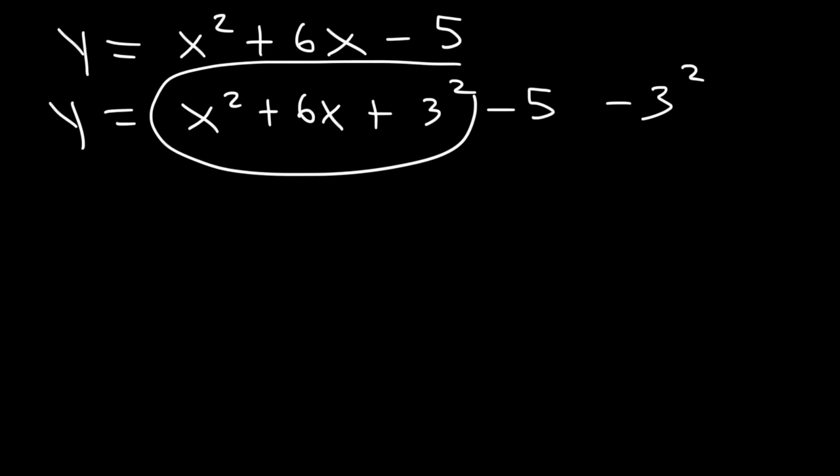Now let's factor x squared plus 6x plus 3 squared. Every time you complete the square, you're creating a perfect square trinomial. And to factor it, you can see everything you need here. First, it's x. Then, whatever this sign is, it's plus. And then it's this number before you square it, 3 squared.